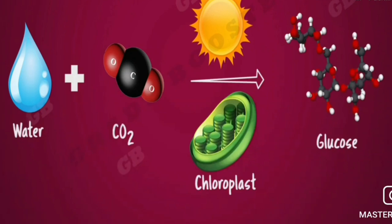These combine and give rise to glucose. The chemical equation is: H2O + CO2, in the presence of sunlight and chloroplast, gives glucose.